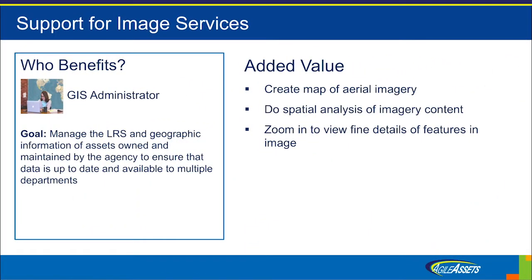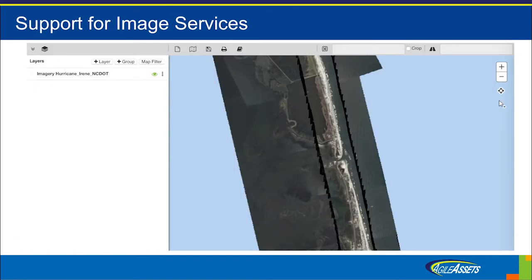To aid the GIS administrator in producing content for other departments and performing analysis of aerial imagery, we've added the ability to create a map layer from a published Esri image service. This screen shows a map layer created from an image service of the coastline of a spit after a hurricane. This can be layered for a before-and-after analysis to see how the coastline has changed after the event occurred.